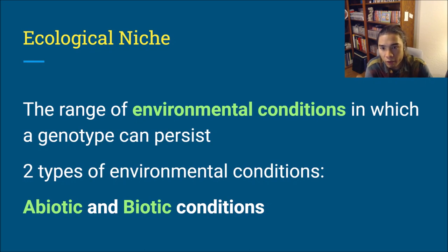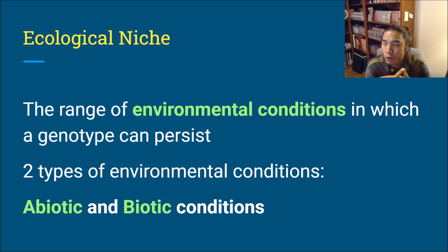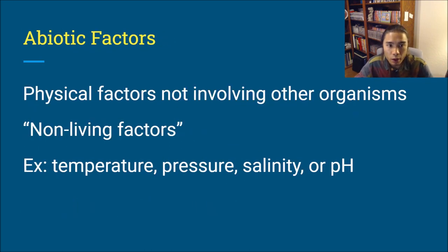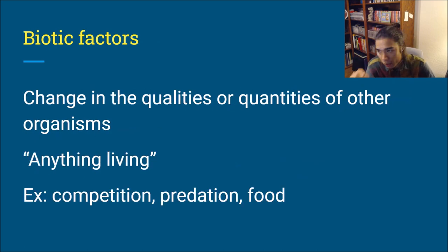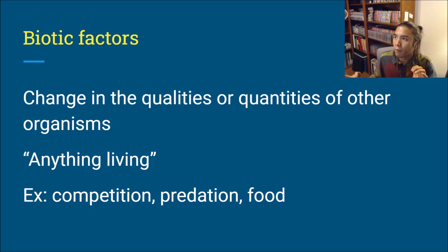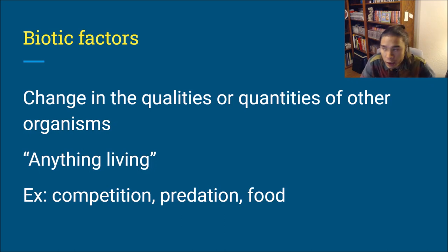Let's move on to the ecological niche, which is the range of environmental conditions in which a genotype can persist — simply, the environment that a given organism does well in. The environment is broken up into abiotic and biotic conditions. Abiotic factors are physical, non-living factors not involving other organisms — like temperature, pressure, salinity, and pH. Biotic factors are anything living within the environment, including competition from other organisms competing for food and resources, predation, and food itself, which is a biotic factor because living things typically eat living things.